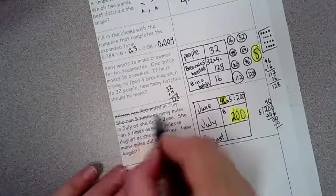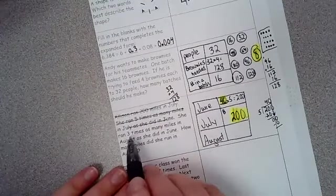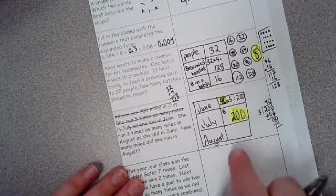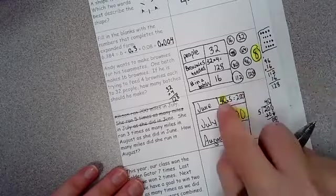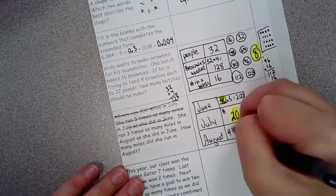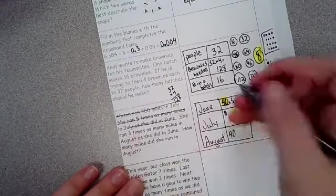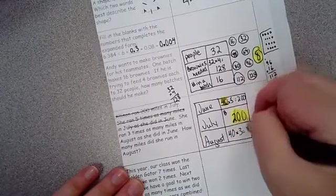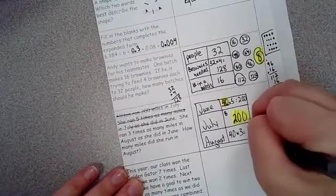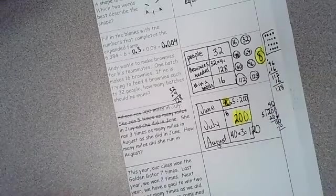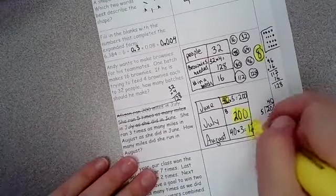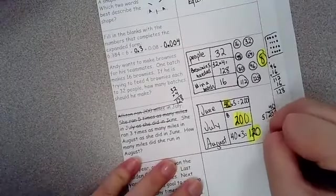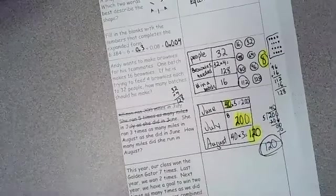Then for August, so we figured out June and July. Then it says she ran 3 times as many miles in August as she did in June. So you've got to take June, which is 40, multiply times 3 to get August. 40 times 3. 4 times 3 is 12, and then add your zero. So how many miles did she run in August? She ran 120. And there's your answer. All right.